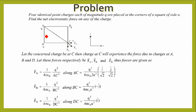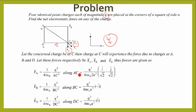Next problem: identical charges Q are placed at the corners of a square of side a. Find the net electrostatic force on any one charge. I want to calculate the force at point C. All charges are positive. Force due to A on C is F_A, force due to B on C is F_B, and force due to D on C is F_D.